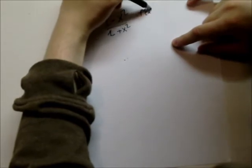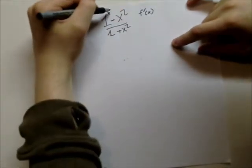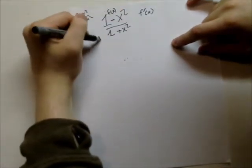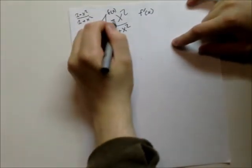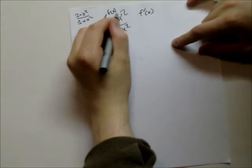f prime of x, which is this is f of x, this is g of x. So f prime of x equals negative 2x.